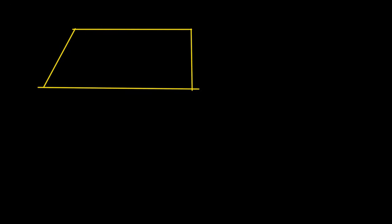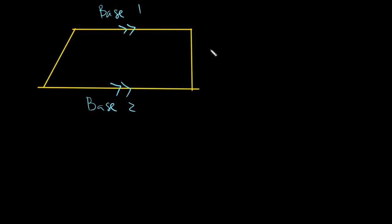In this figure, the bases would actually be the side that is parallel. So this is your base one, and this is your base two — you can interchange them. After having the bases, we will also have our legs. Legs are just simply the non-parallel sides of your trapezoid.